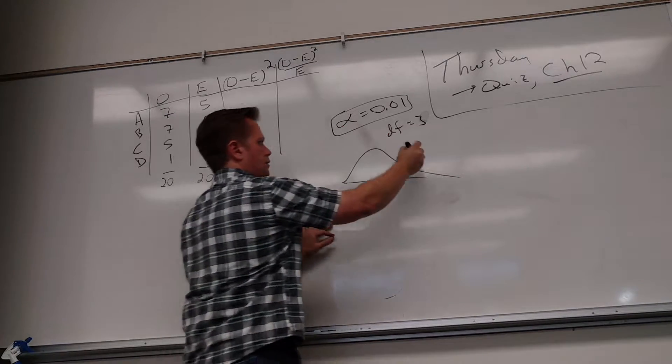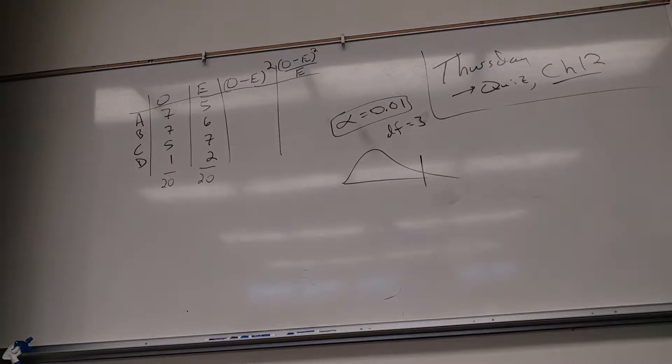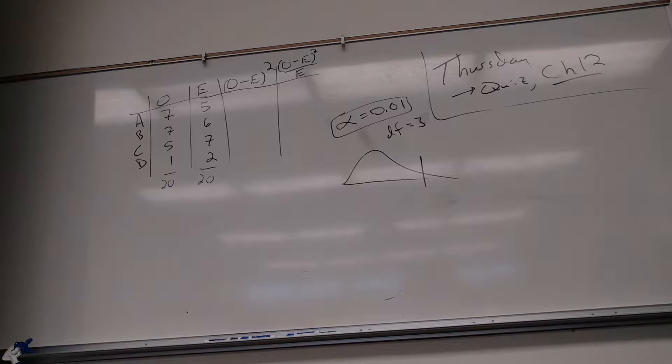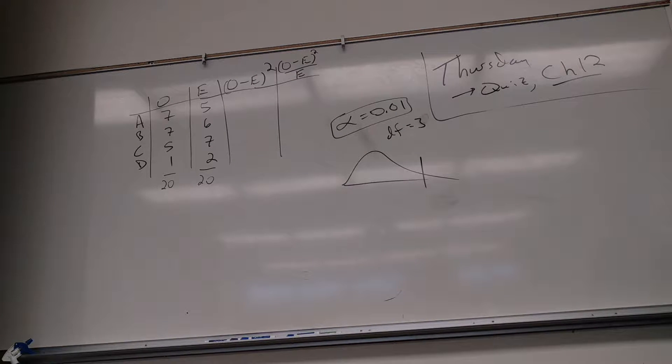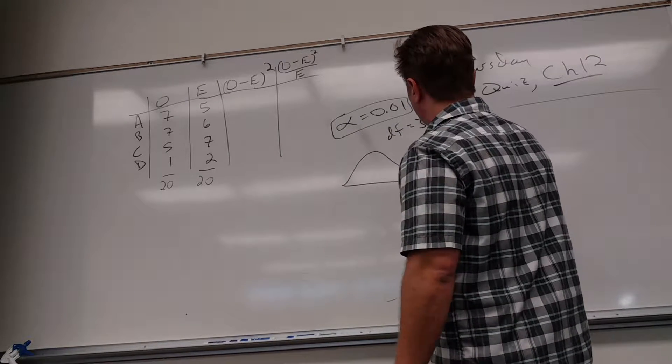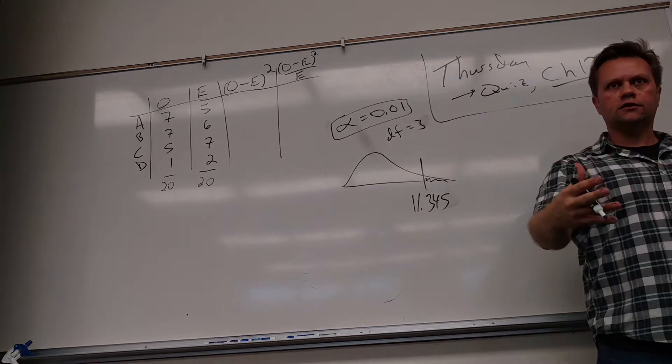So what's my critical score going to be? Degrees of freedom is 3, 0.01, yeah, 11.345, I like it. So 0.01, degrees of freedom is 3, 11.345. So that's how far away I've got to get to show evidence that they are different.